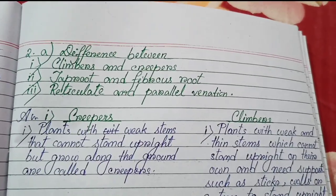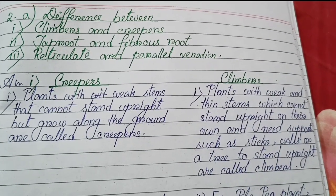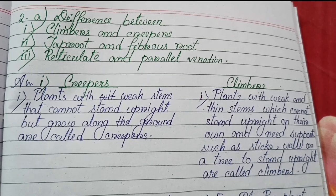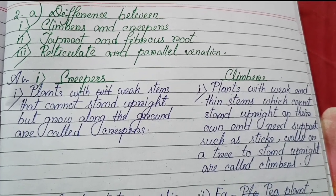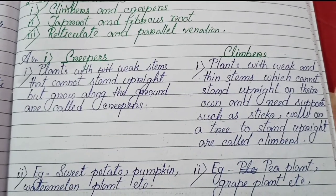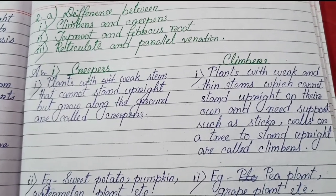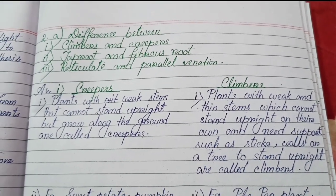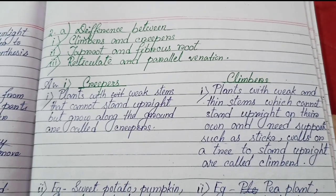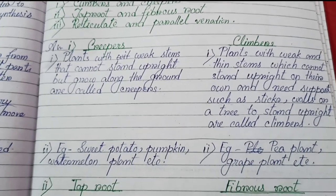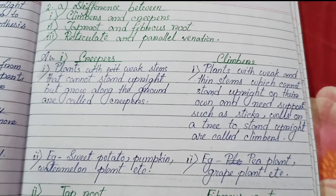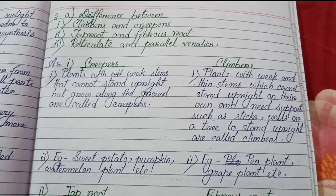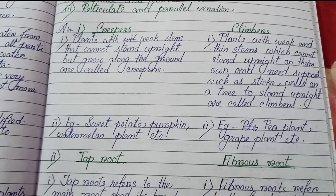Number two: Differentiate between climbers and creepers. Creepers: plants with weak stems that cannot stand upright but grow along the ground are called creepers; examples are potato, pumpkin, watermelon plant, etc. Climbers: plants with weak and thin stems which cannot stand upright on their own and need support such as sticks, walls and a tree to stand upright are called climbers; examples are pea plant, grape plant, etc.